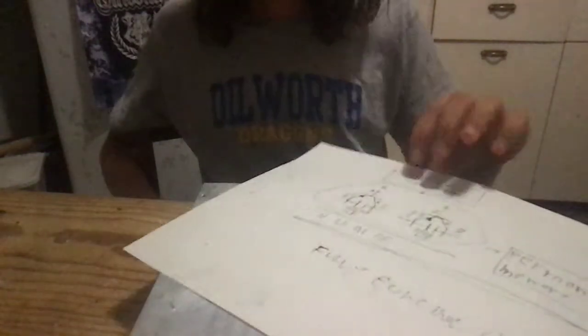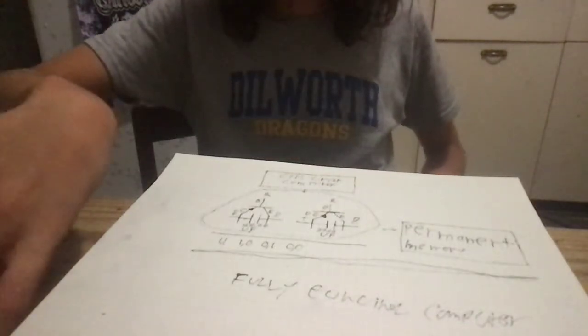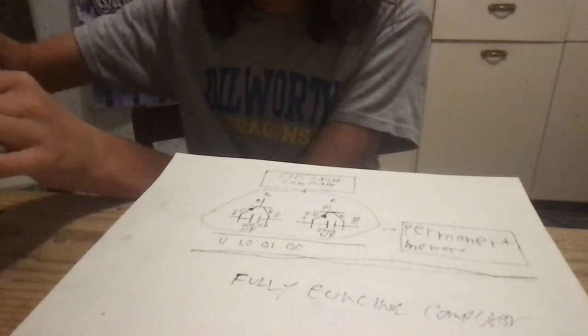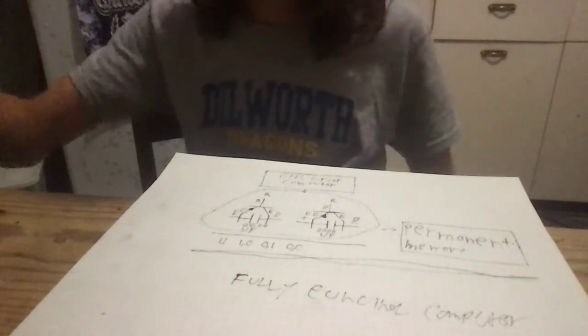It can store, this is how much information it can store at once. One one, or one zero, or zero one, or zero zero. All right.